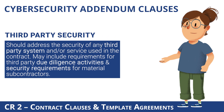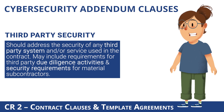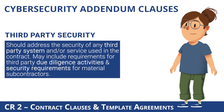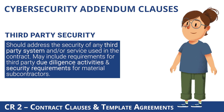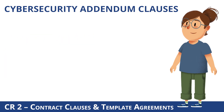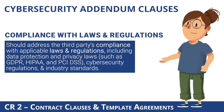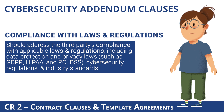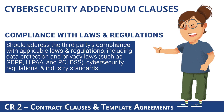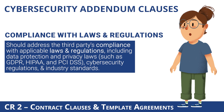Third-party security — this clause should address the security of any third-party system and/or service used in the contract, and may include requirements for third-party due diligence activities and security requirements for material subcontractors. Compliance with laws and regulations — this clause should address the third party's compliance with applicable laws and regulations, including data protection and privacy laws such as GDPR, HIPAA, and PCI DSS, cybersecurity regulations, and industry standards.